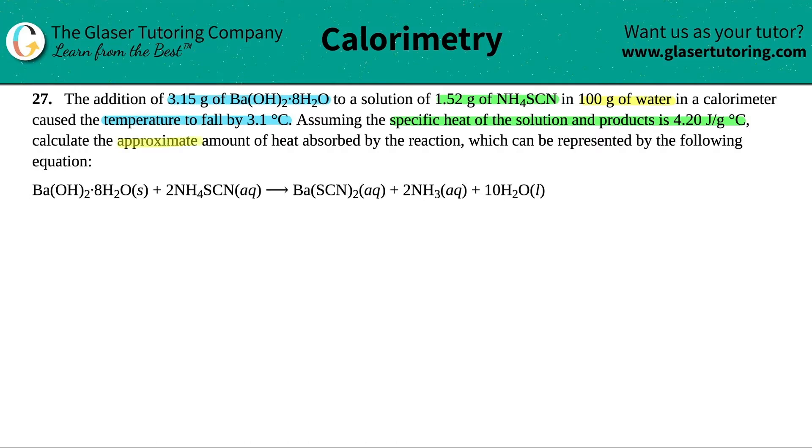calculate the approximate amount of heat absorbed by the reaction, which can be represented by the following equation. This is solution calorimetry. We're adding different components together: barium hydroxide octahydrate, NH4SCN, and water. I know we're dealing with a solution because they told us the specific heat of the solution is 4.20 joules per gram degree Celsius, and they're asking for the amount of heat absorbed by the reaction.